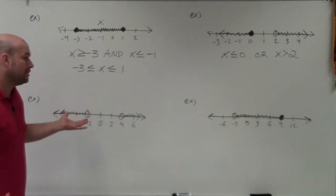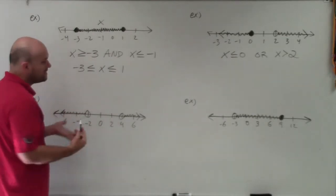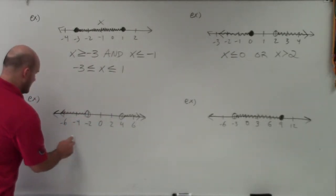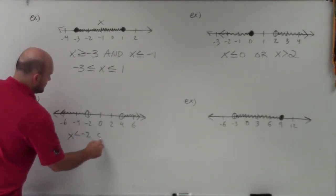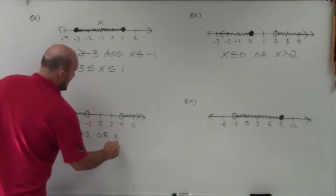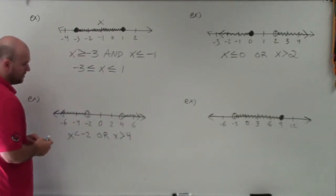Over here, we have another or statement. However, now we have two open points. So again, we just go ahead and write them separately. So I can say x has to be less than negative 2, or x is greater than 4.